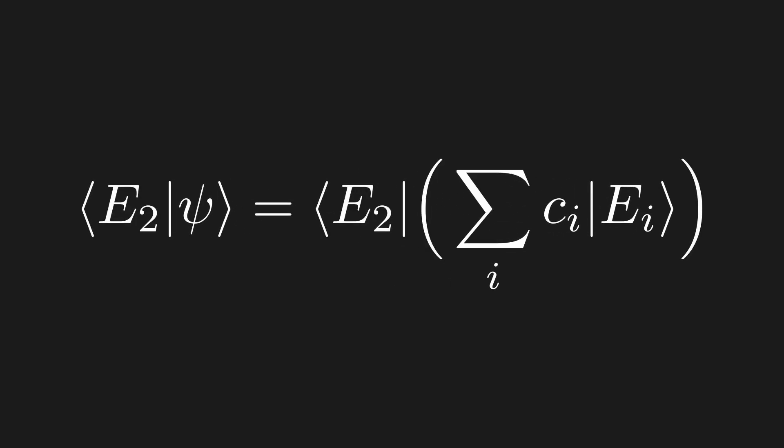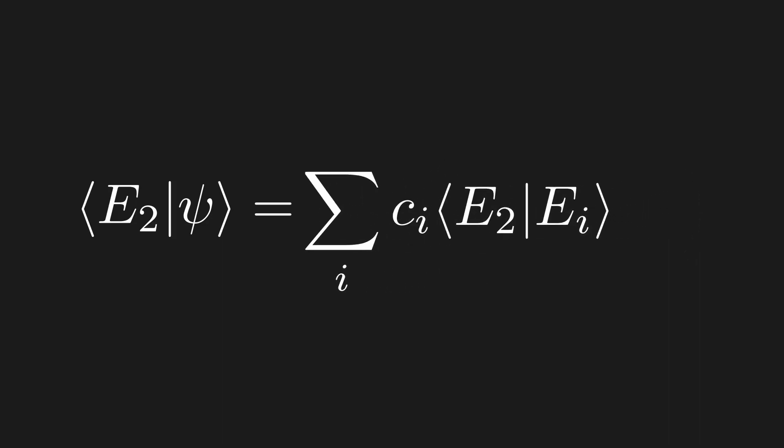Using the fact that the inner product is linear in the right slot, we can move the inner product into the sum. Now, let's write the inner product as a Kronecker delta. Remember that the Kronecker delta only equals 1 when the indices match, equaling 0 otherwise. So, when we sum over a Kronecker delta, all elements of the sum will be 0, except the one that matches the index. So, what we can do is collapse the sum, and anywhere we see an i, we just replace that with a 2. So, what we get is our coefficient.